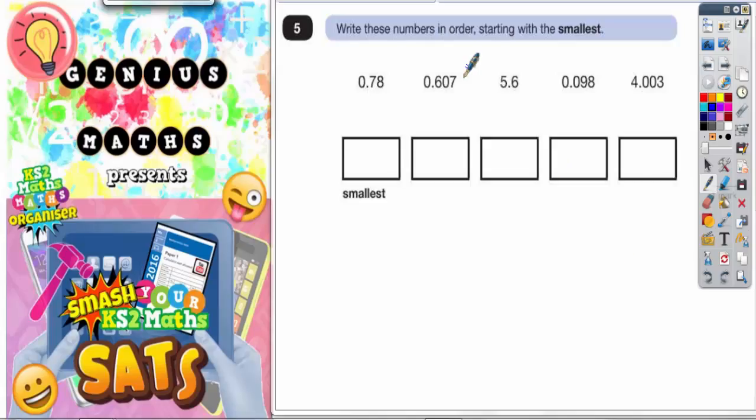Question 5. Write these numbers in order starting with the smallest. Okay, now then, basically we've got to look at the units column in each one.